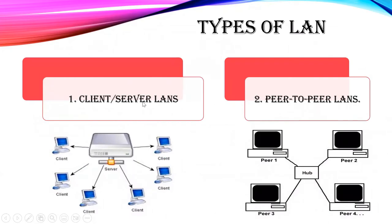There are two types of LAN: client-server LAN and peer-to-peer LAN. In client-server LAN, several devices are connected to a central server, with n number of clients. These clients connect to the server through either wired cables or wireless connections.